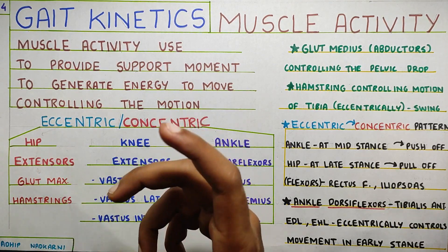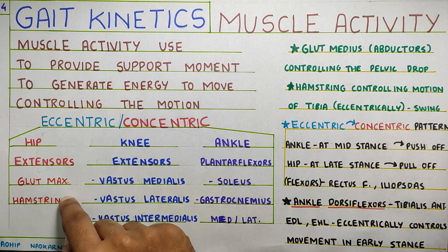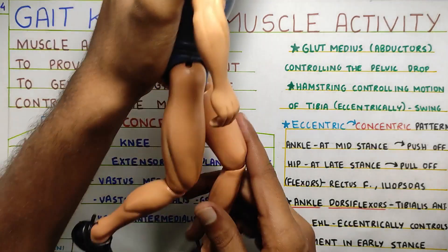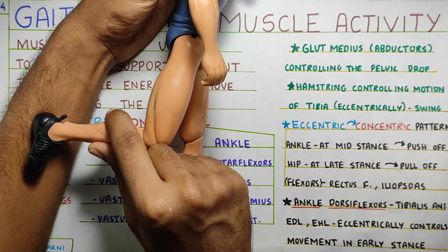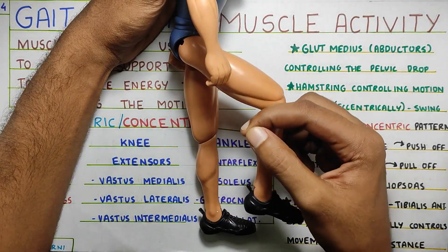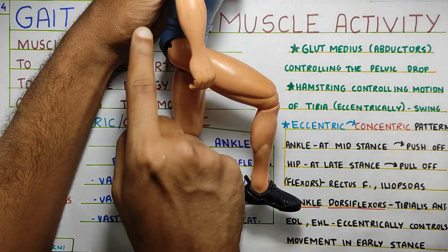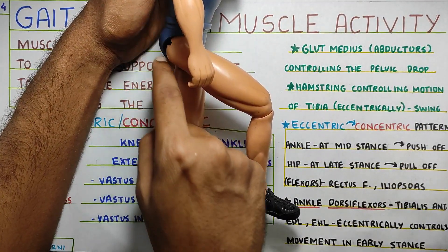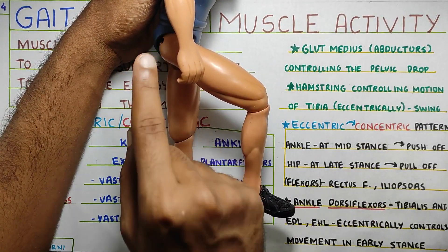Let's start with the hip joint — hip extensors. What are the hip extensors? There is the most important gluteus maximus and then there is the hamstring. When will glutes and hamstring work eccentrically? If you take the stance phase on one side and swing phase on the other, when your foot is swinging ahead, flexion is happening at the hip joint. To control this flexion, your glutes will have to work eccentrically because they are lengthening posteriorly. So that's when the eccentric activity of hip extensors is seen.